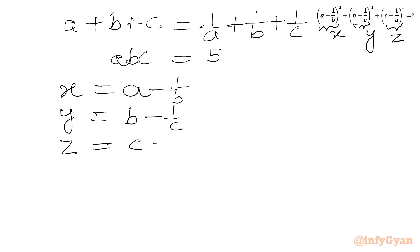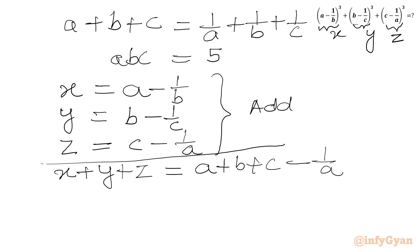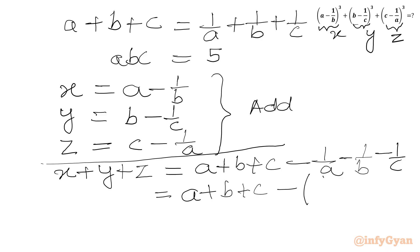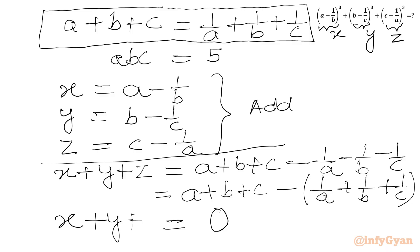And z is (c minus 1/a). Now we will add these three equations. So LHS gives x plus y plus z, and the RHS gives a plus b plus c minus 1/a minus 1/b minus 1/c. Since a plus b plus c equals 1/a plus 1/b plus 1/c, the RHS equals 0. So x plus y plus z equals 0.